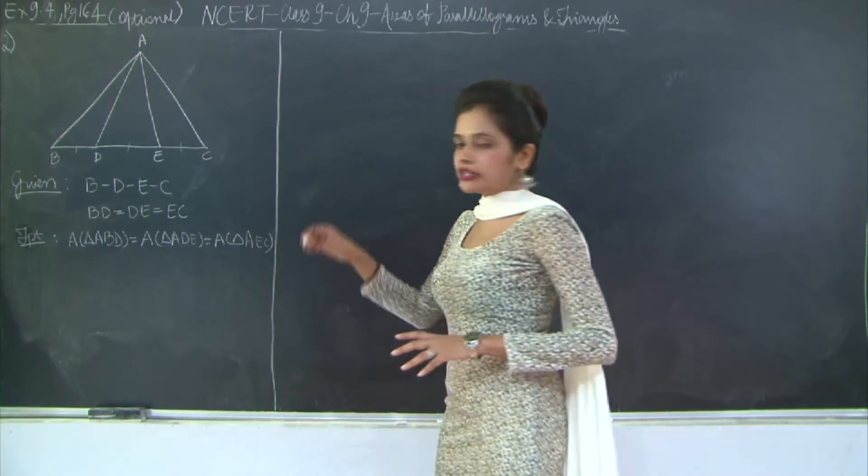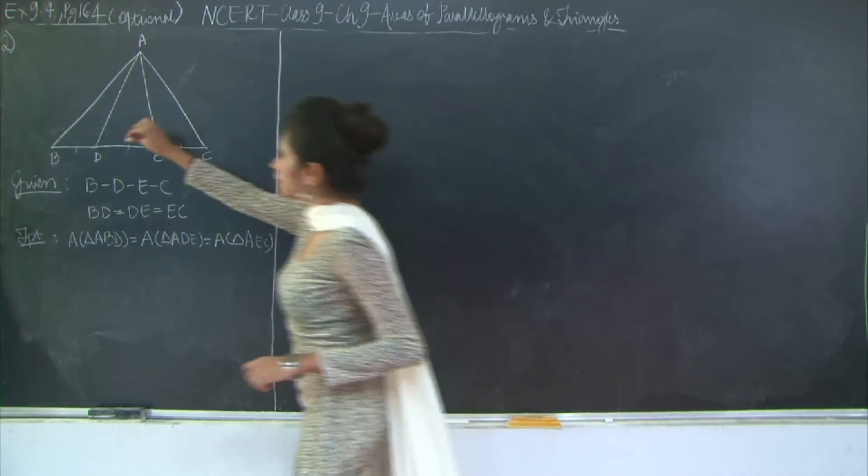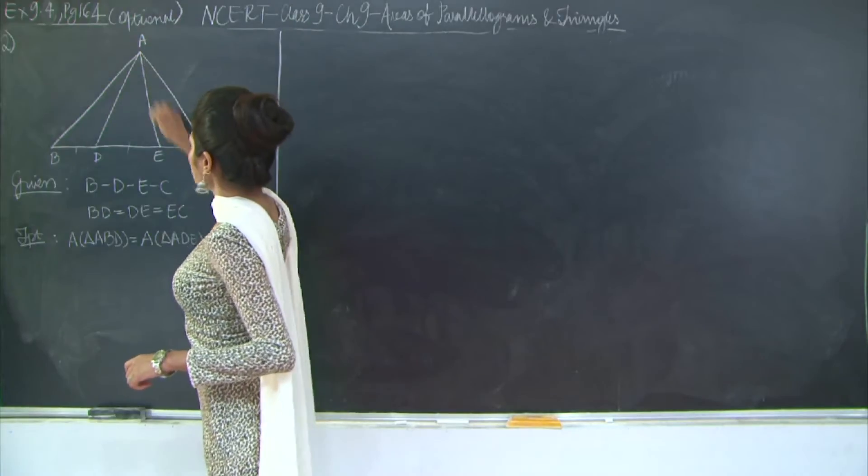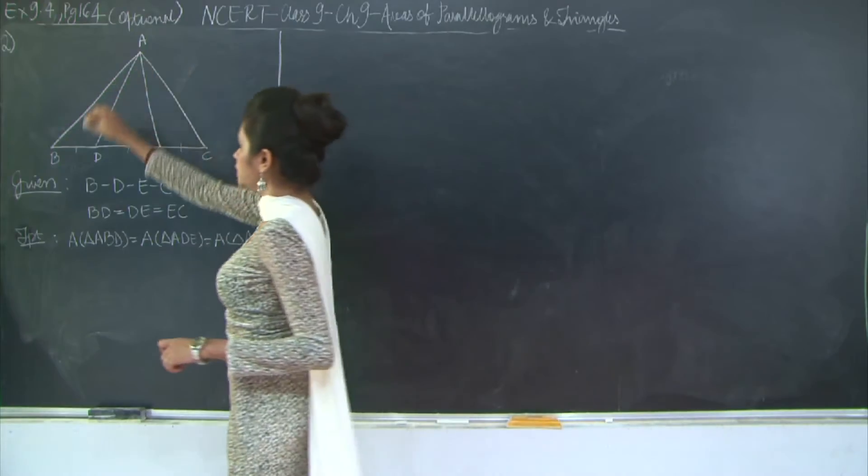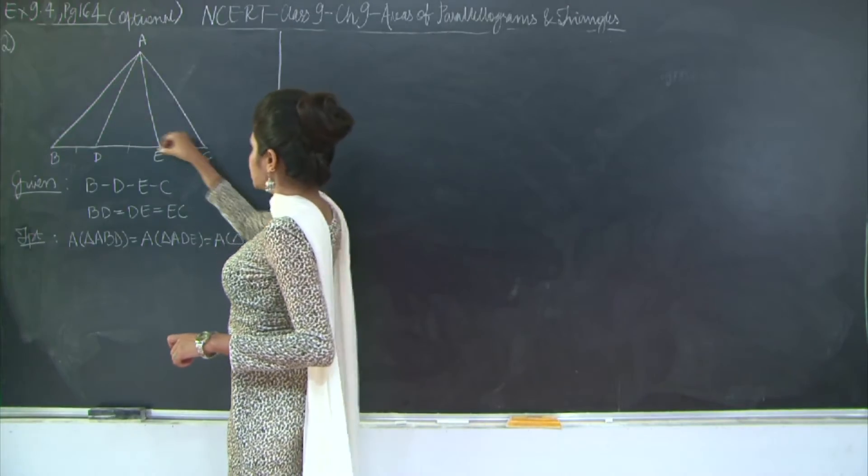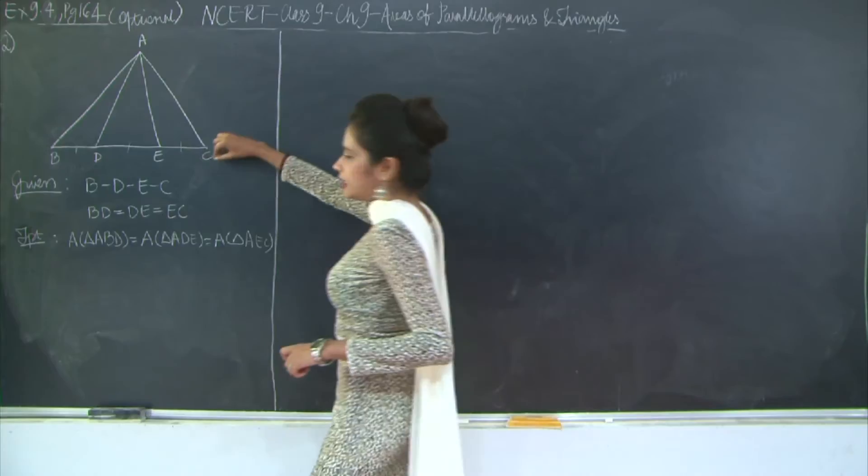I need to prove that the three triangles so formed by connecting these points to the opposite vertex are equal. The areas are equal, that is area of triangle ABD is equal to area of triangle ADE is equal to area of triangle AEC.